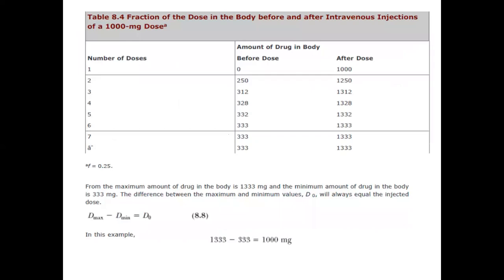For a dose of 1000 mg: before the first dose, the body has 0 mg; after giving it, the body has 1000 mg. Before the second dose, 25% of 1000 mg (i.e., 250 mg) remains in the body. After giving the second 1000 mg dose, the total becomes 1250 mg. Before the third dose, 25% of 1250 mg = 312 mg remains, and after giving 1000 mg again, the total becomes 1312 mg.